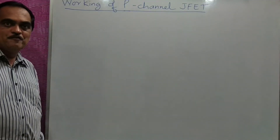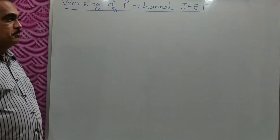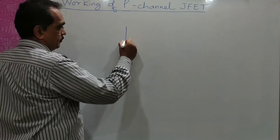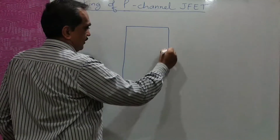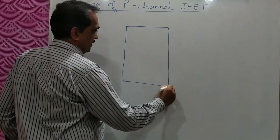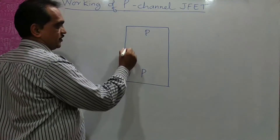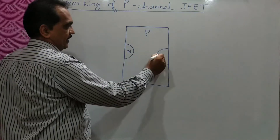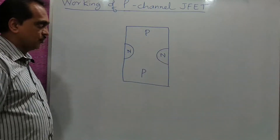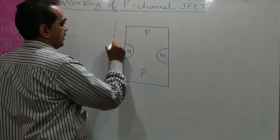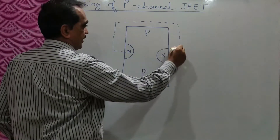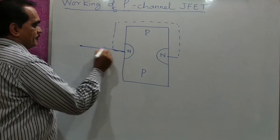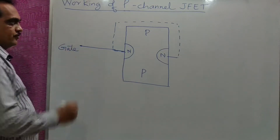Dear students, now we will see the working of a p-channel JFET. A p-channel JFET is a p-type semiconductor bar in which a small n-type semiconductor is induced on both sides. These both n-type semiconductors are internally connected, and that terminal is called the gate.